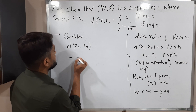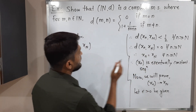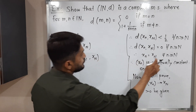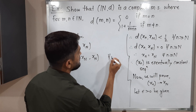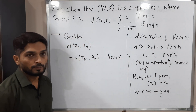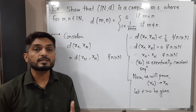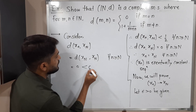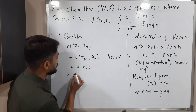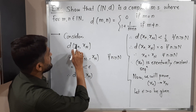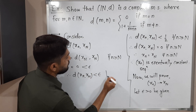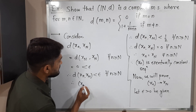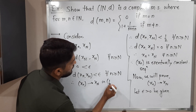We have already established that X_n = X_N for all n ≥ N. So replacing X_n by X_N, we get D(X_N, X_N). Both terms are the same, so the distance is 0. And 0 < ε since ε > 0. Therefore D(X_n, X_N) < ε for all n ≥ N. This is the definition of a convergent sequence. Therefore, X_n converges to X_N in (N, D).